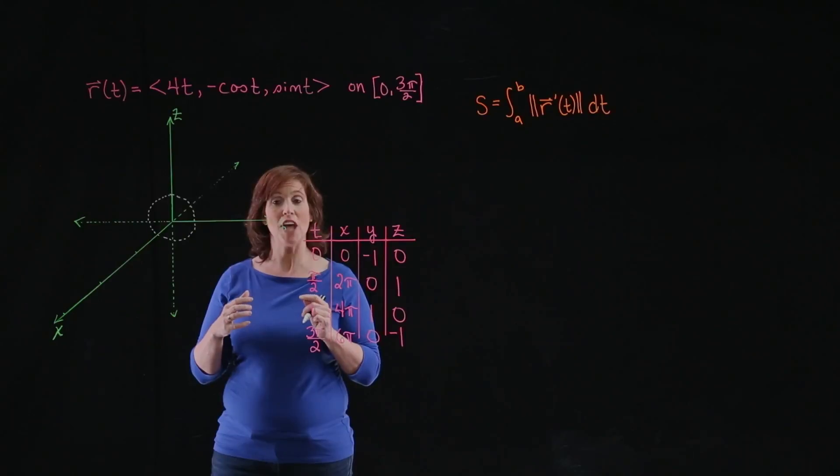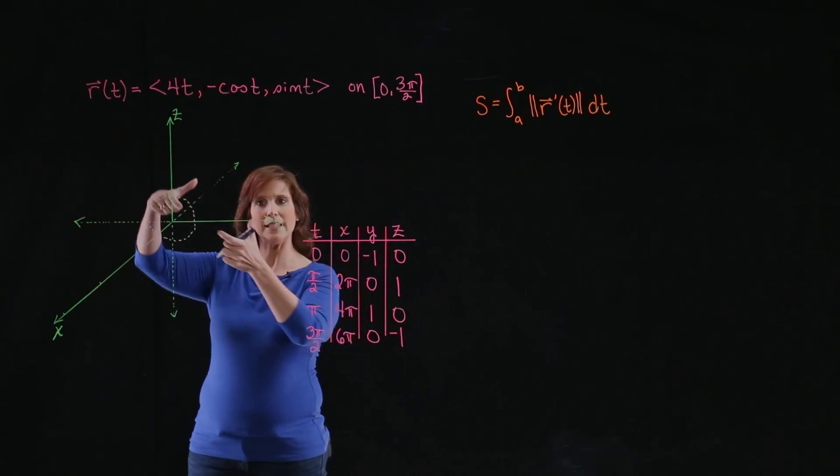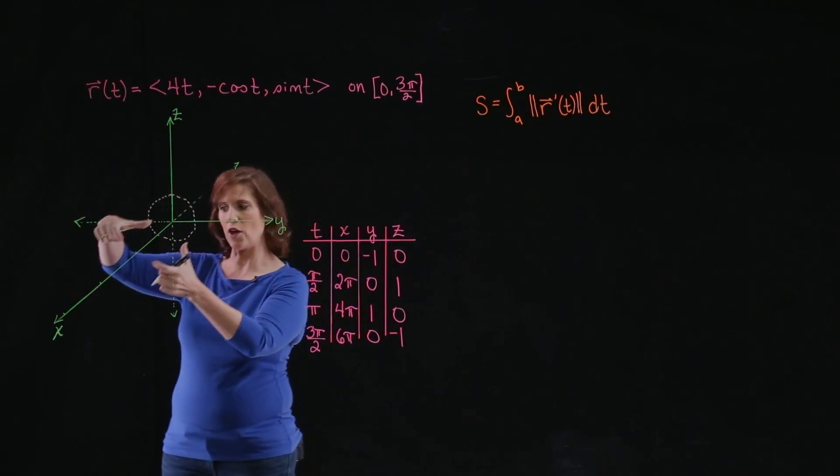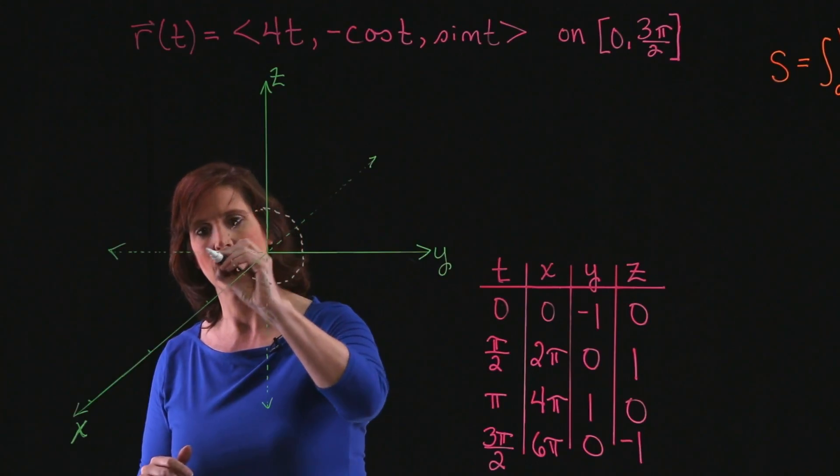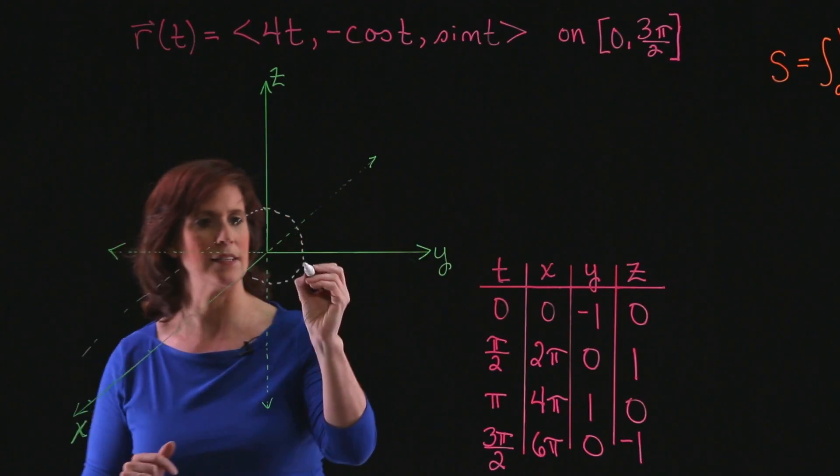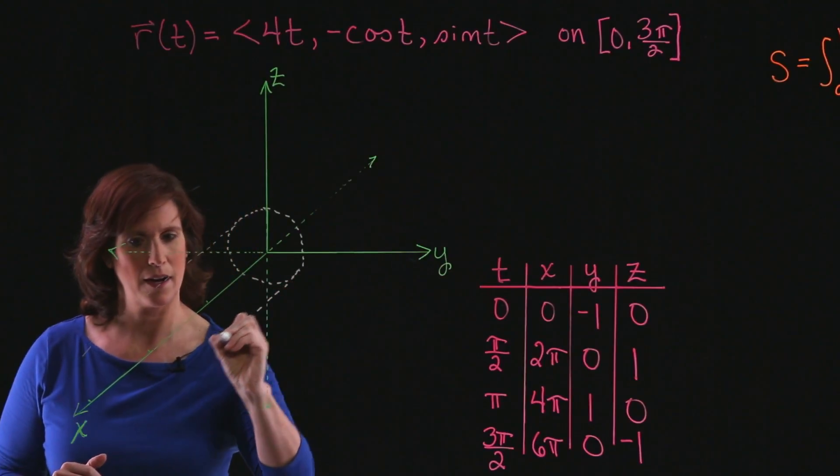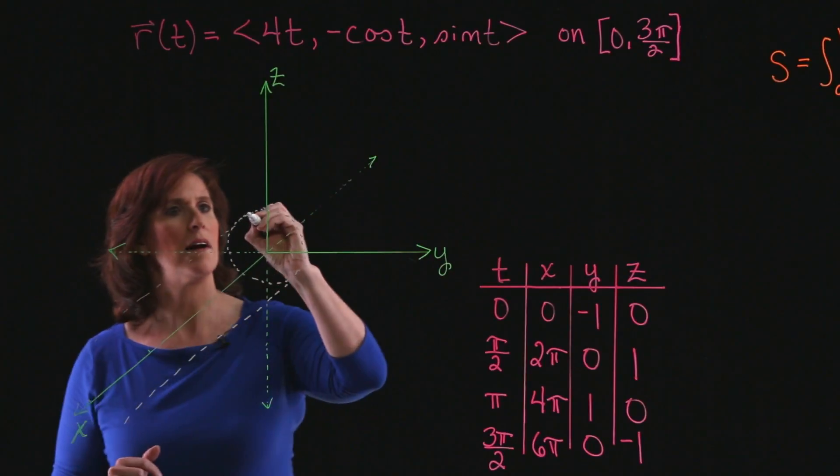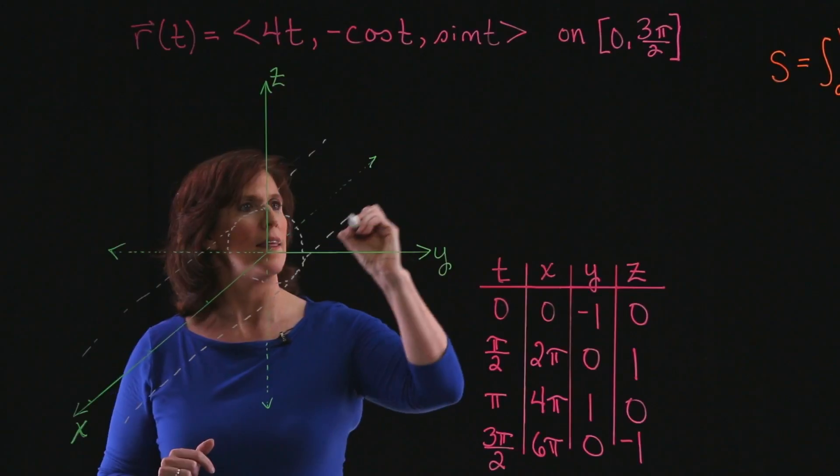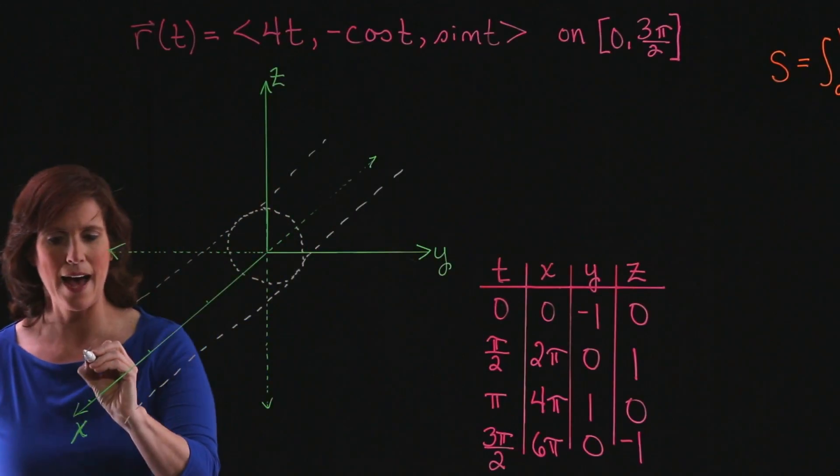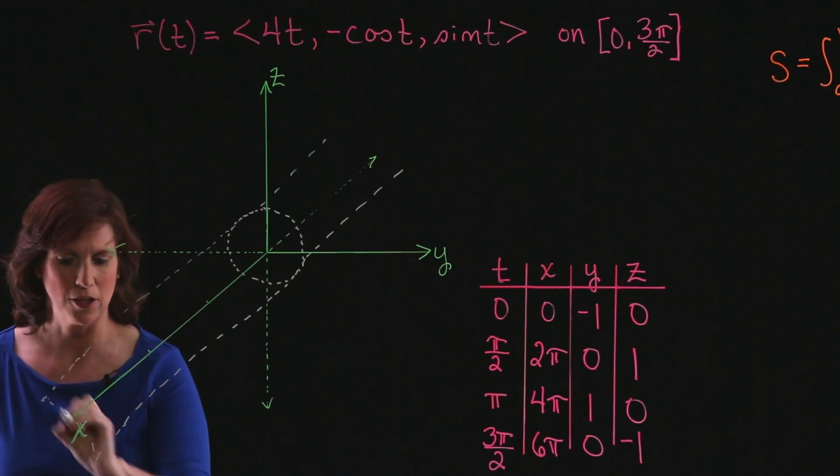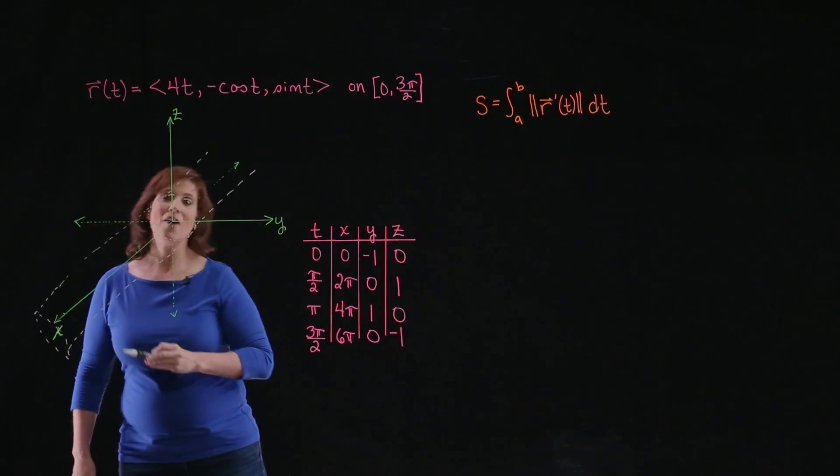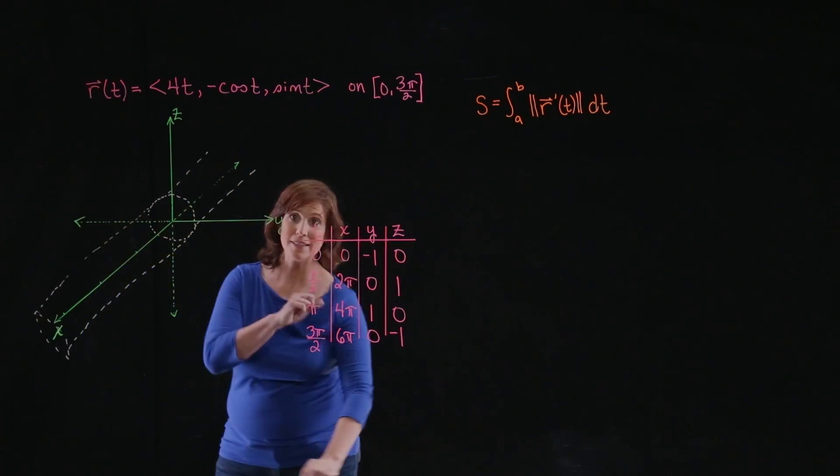Now, because the x value is changing, that means I'm basically creating a cylinder that goes out along the x-axis. So I'll come out and say I have a cylinder right along that x-axis, so I can kind of get a feel of what that shape is going to look like. Now let's go ahead and plot these points.